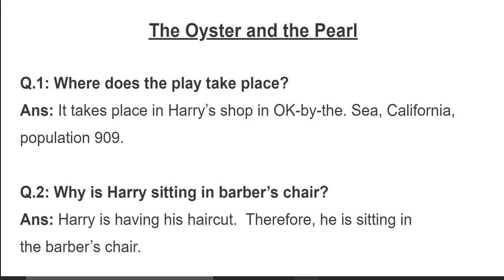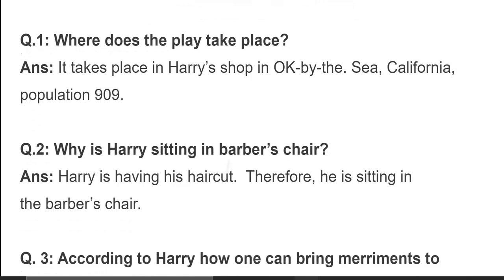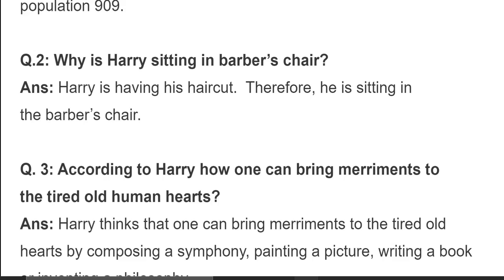Bismillahirrahmanirrahim, Assalamu Alaikum. This is Aisha. Today we will discuss the exercise questions of Play Number Three, 'The Oyster and the Pearl.' Question number one: where does the play take place? The play takes place in Harry's shop in OK by the Sea, California, population 909.